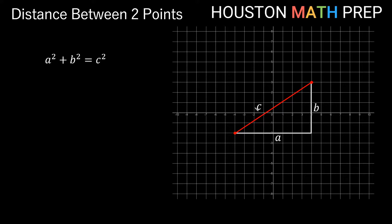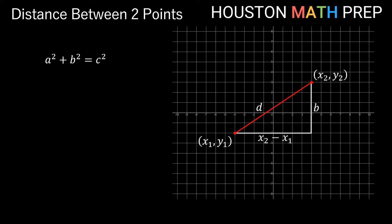Since distance starts with d instead of c, we're going to call our hypotenuse d. We'll label these points: the first one x1 comma y1 and the second point x2 comma y2 — these subscripts just tell you which point we're talking about. This a side is how much we travel from x1 to x2 in the x direction, so a equals x2 minus x1. The b side travels only in the y direction, so b equals y2 minus y1.